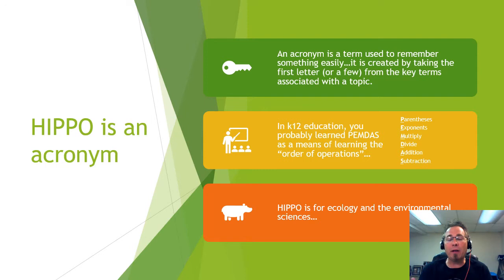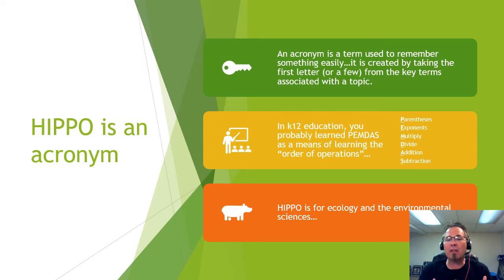HIPPO is an acronym — where you take the first letter of each word. Maybe in school you used PEMDAS for order of operations: parentheses, exponents, multiply, divide, addition, subtraction. Similarly, HIPPO is an acronym used in ecology and environmental science to describe the big concepts that need to be addressed when dealing with sustainability.